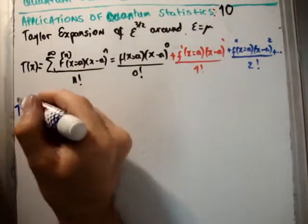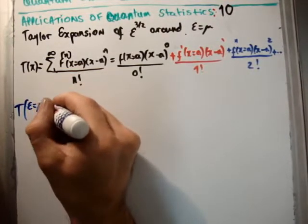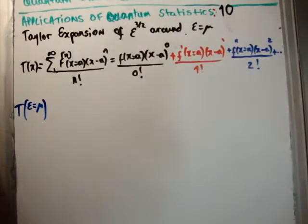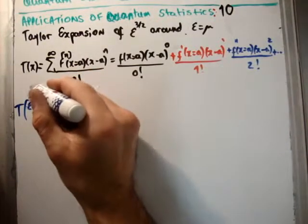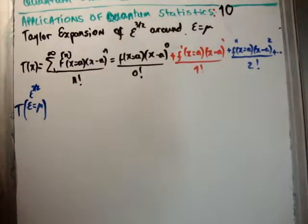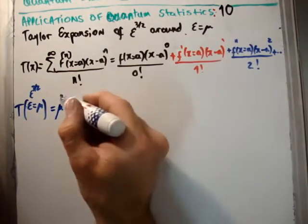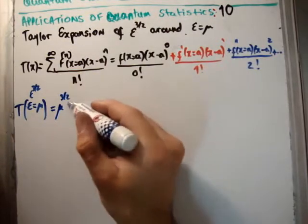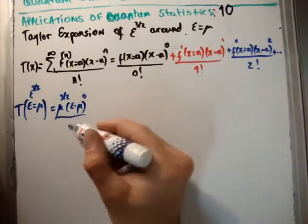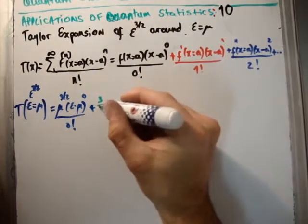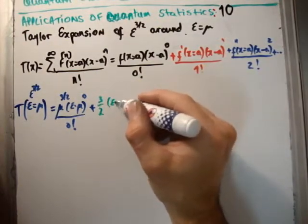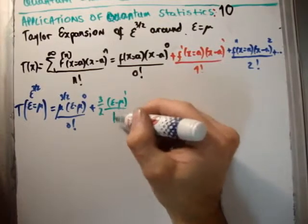So T at ε = μ. The Taylor expansion of ε^(3/2) at ε equal to μ is going to be equal to μ^(3/2), (ε - μ)^0 over 0 factorial. 0 factorial, by the way, is equal to 1. We have plus 3/2.